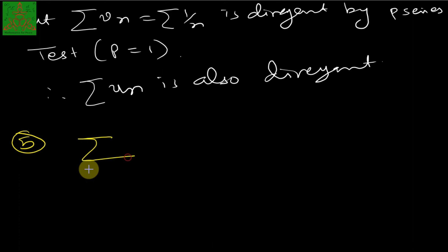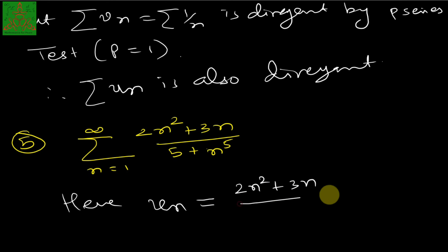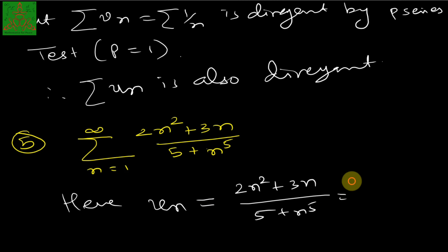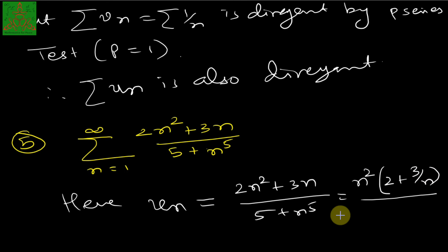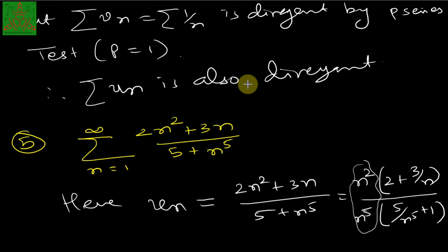The fifth example: test the convergence of summation from n=1 to ∞ of (2n² + 3n)/(5 + n⁵). Since this is polynomial over polynomial, we factor out the maximum power: n² from the numerator gives (2 + 3/n), and n⁵ from the denominator gives (5/n⁵ + 1). After cancellation, v_n = 1/n³.